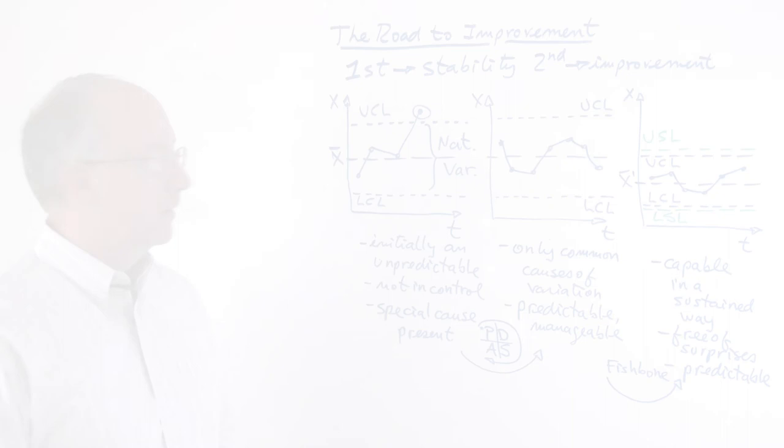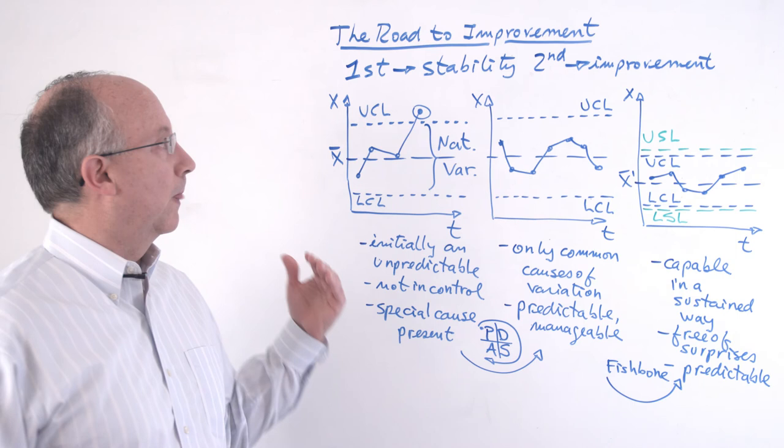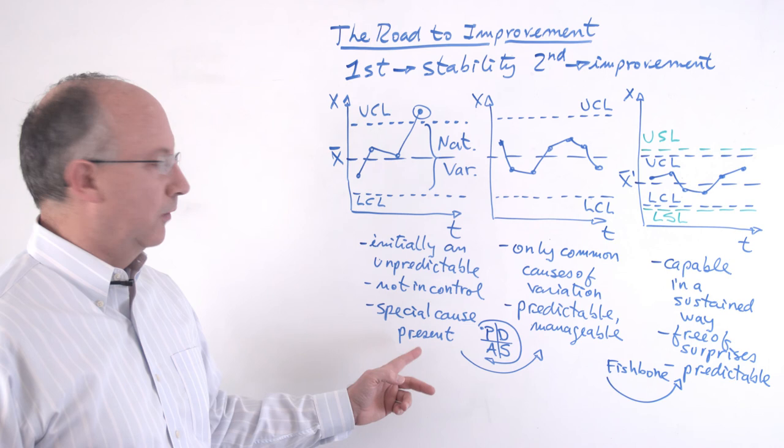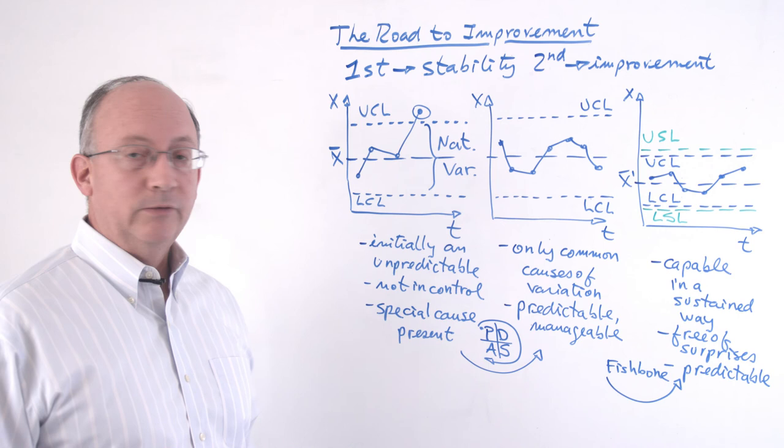So in summary, the road to improvement moves from lack of predictability to a predictable process and then on to a capable process. And the way in which teams walk this road of improvement is by using tools in order to address each one of the special causes with tools such as PDSA or Kaizen, and then to actually improve the system of production and the system of causes with tools such as the fishbone diagram. Thank you for your time.